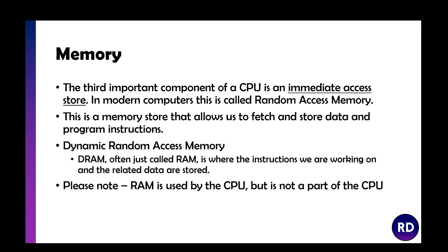Memory is a really important component of a CPU because we need an intermediate access store. The CPU mainly uses RAM — random access memory — which allows us to fetch and store data and program instructions. The RAM used nowadays is called DRAM, or Dynamic Random Access Memory, and that is where the instructions and data currently being worked on are stored. However, RAM is not inside the CPU; it's used by the CPU but they are two separate things.